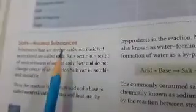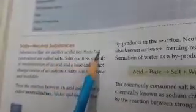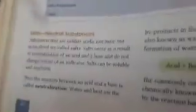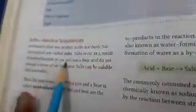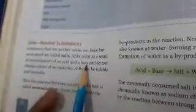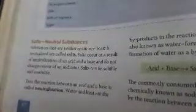Salts also exist. Substances that are neither acid nor base but neutral are called salts. Salts occur as a result of neutralization of an acid and a base and do not change the color of an indicator.